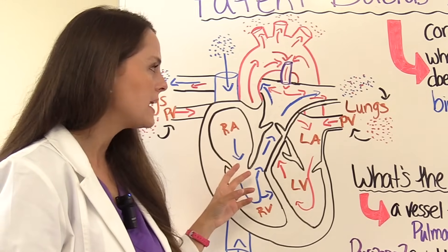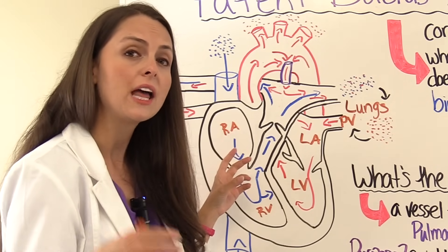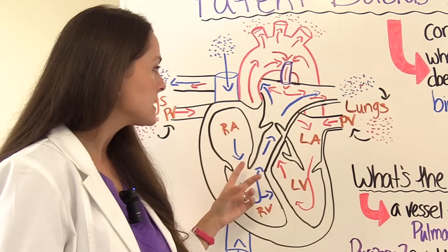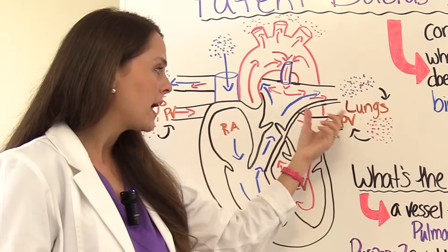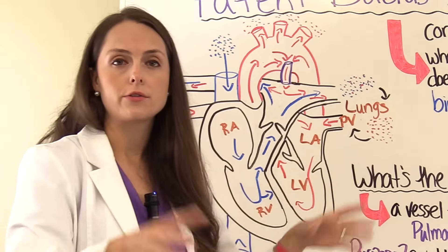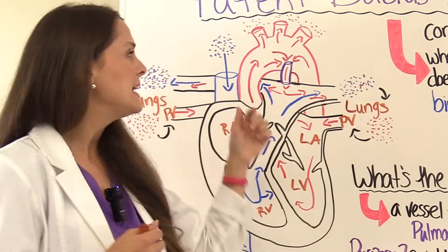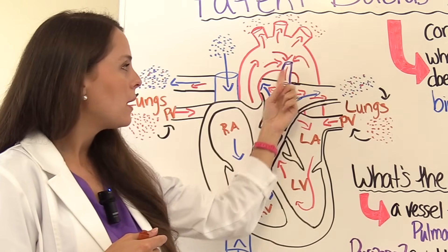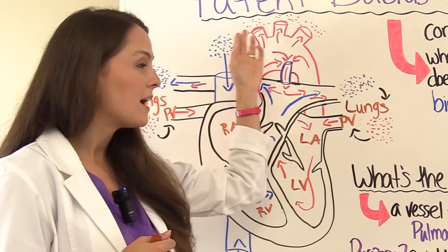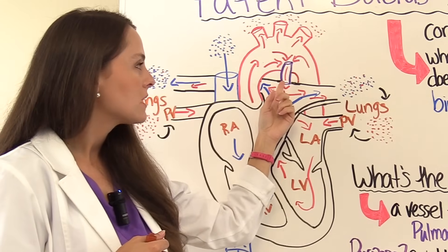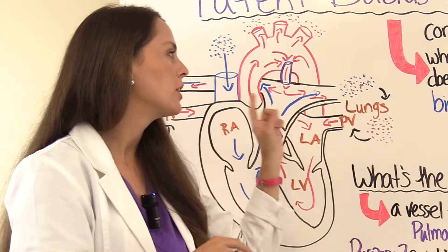Deoxygenated blood now needs to get to the lungs because the baby no longer has the placenta to give it oxygen. So blood on the right side goes to the lungs, gets oxygenated, enters back through the pulmonary vein into the left side, and is shot up through the aorta. But if the ductus arteriosus is still open, blood in the aorta will pour down through the pulmonary artery, sending all this extra oxygenated blood back to the lungs.